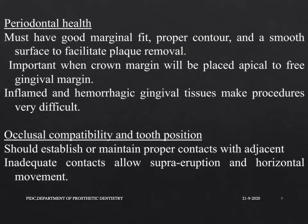Regarding occlusal compatibility and tooth position, the provisional restoration should establish or maintain proper contacts with adjacent teeth. Inadequate contacts allow supraeruption and horizontal movement. Without proper occlusal contacts, the prepared tooth may extrude. This will make the permanent restoration too high in occlusion, and further adjustment of the final restoration may result in an occlusal surface that is too thin or perforated.